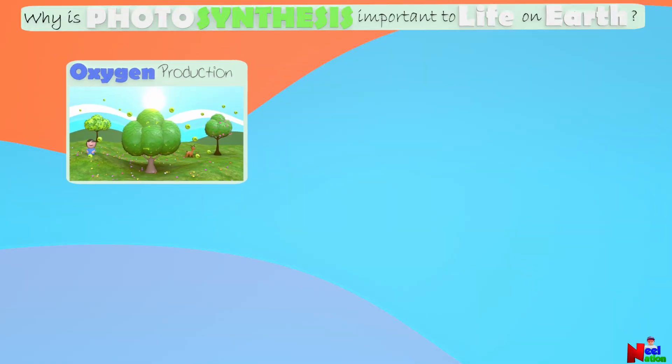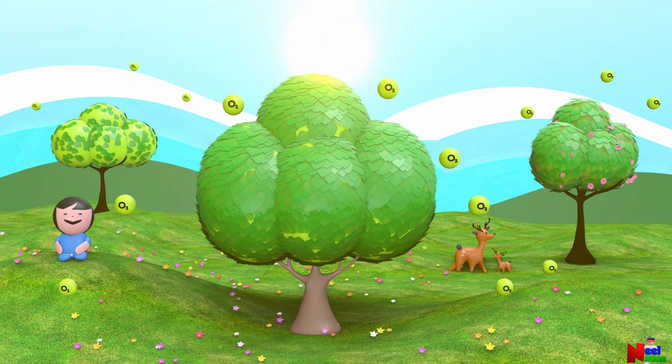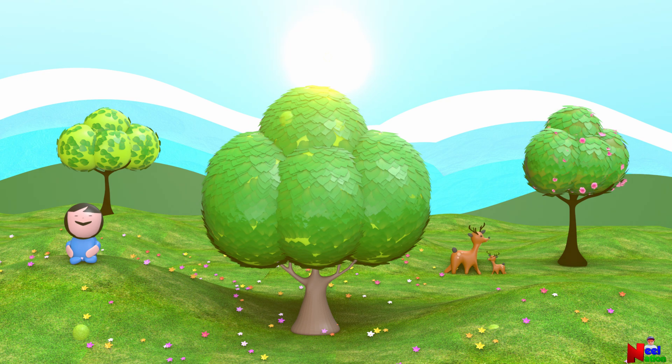Photosynthesis helps in many amazing ways. Oxygen production. Plants make oxygen during photosynthesis and release it into the air. We need oxygen to breathe and stay alive, and so do most animals.